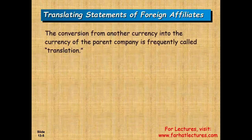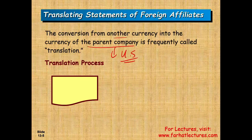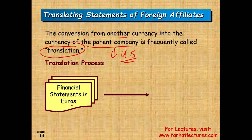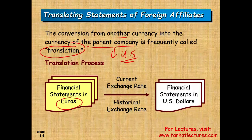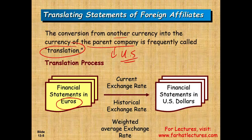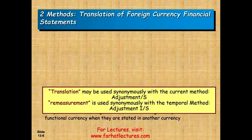Here's another big picture view. What we're doing is the conversion from one currency into the currency of the parent company — we're always assuming it's a US company. The process is called translation. We have financial statements in euros and we translate them into US dollars. When we translate, we could use the current rate, the historical rate, or the average weighted rate. There are specific rules for when to use each rate. We have two methods of translation: re-measurement and translation.